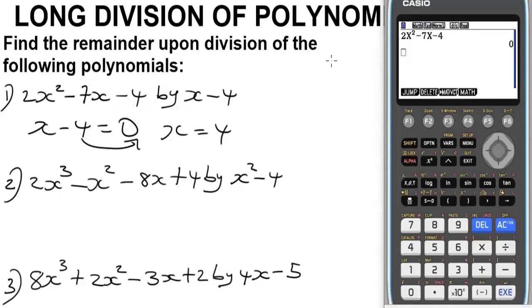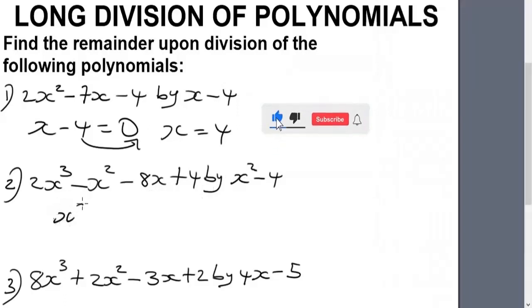Let's delete everything here and solve question two. Question two gives us this polynomial which we are dividing with this value. This is the divisor, x² minus 4. As usual, you equate this divisor: x² minus 4 equals zero. This 4 crosses the equality sign, so I'm going to have x² equals 4.